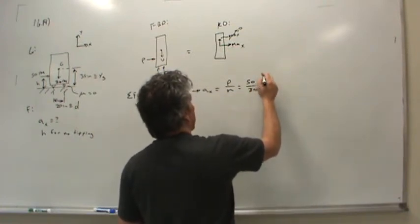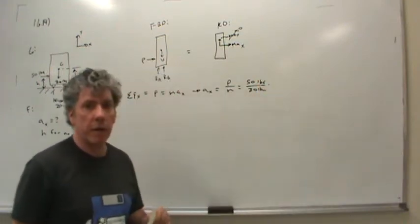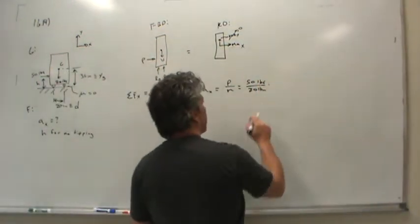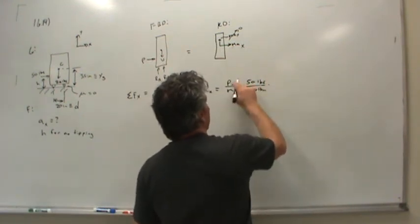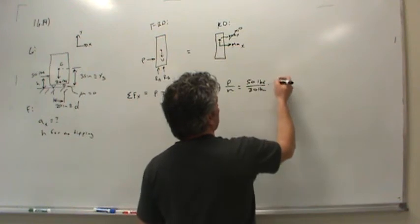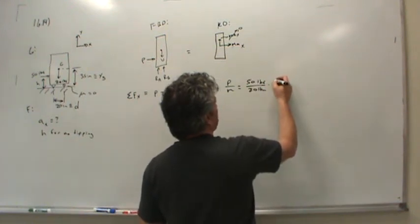Mass, again, these are not units that we're used to using for acceleration, but they are valid units of acceleration. The pound force per pound mass is an acceleration dimension or unit. What we usually like is feet per second squared.